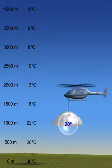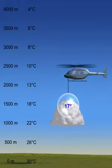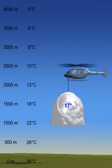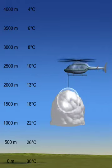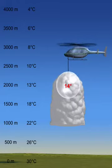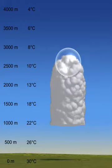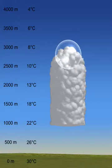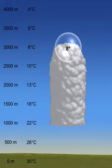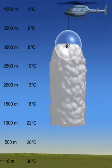The latent heat released inside the cloud warms the air to the point that the rising air is now warmer and less dense than the air surrounding it. The cloud will continue to build until the rising air inside the cloud becomes the same temperature as the air surrounding the cloud.